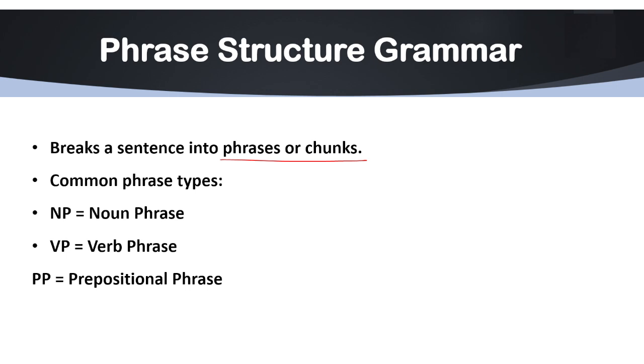Examples of phrases can be NP, that is noun phrase; VP, that is verb phrase; and PP is prepositional phrase. If we talk about noun phrase, it is a group of words that act as a noun. Group of words that act as a verb are called verb phrase.